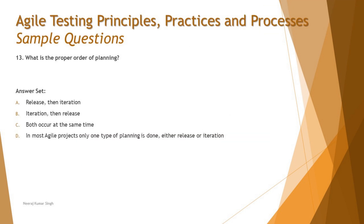To get started, the next question in the series is Question 13. It asks a very straightforward thing: what is the proper order of planning? We have covered that there are a few standard planning events which happen in Agile, and there are just two of them — number one is release planning, and then you have iteration planning.